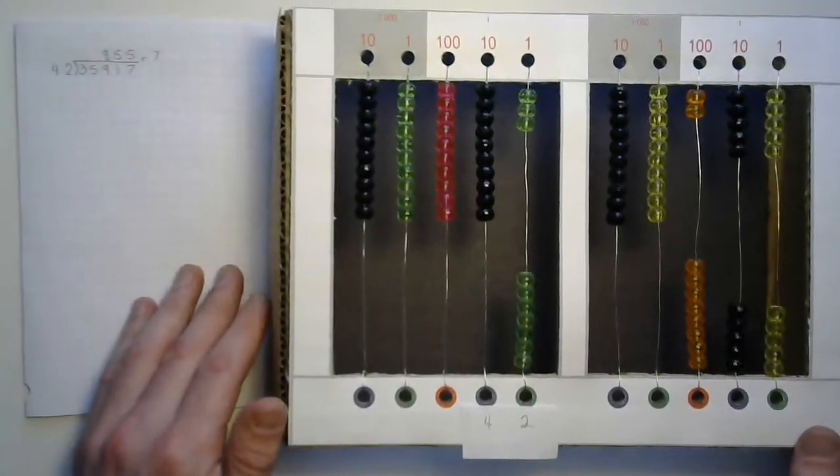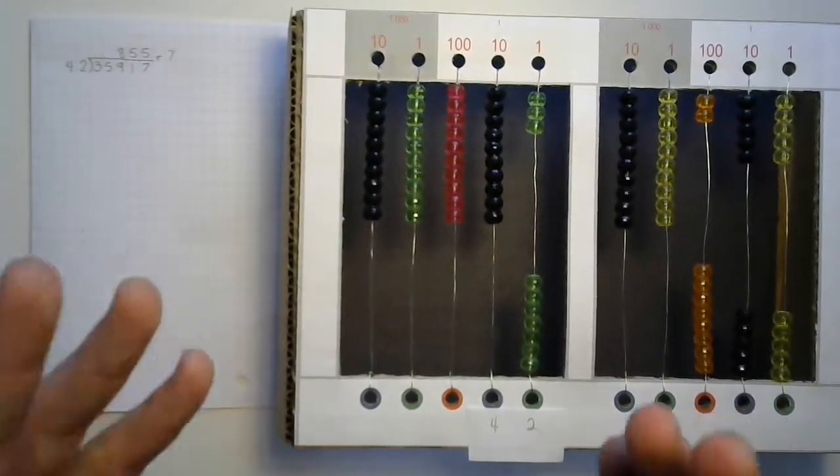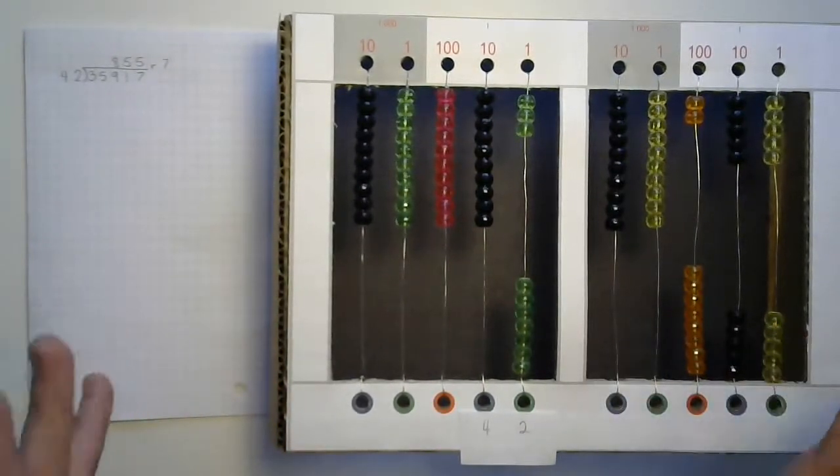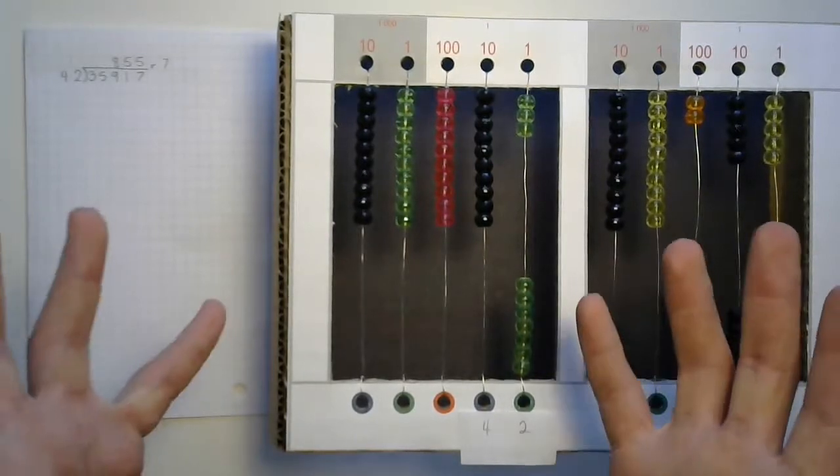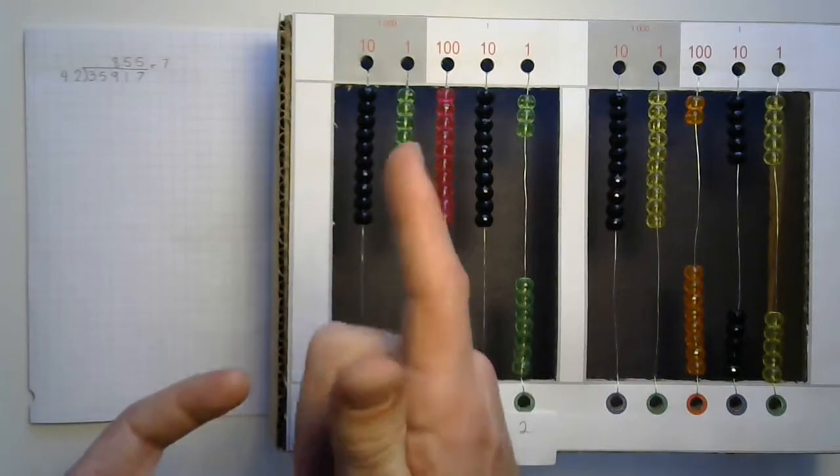Well, if you had 35,917 donuts, 42 people came in and could actually eat enough donuts to make it worthwhile. Each of them would eat 855 donuts. And there'd be seven left over for you to eat. Don't get a stomach ache.